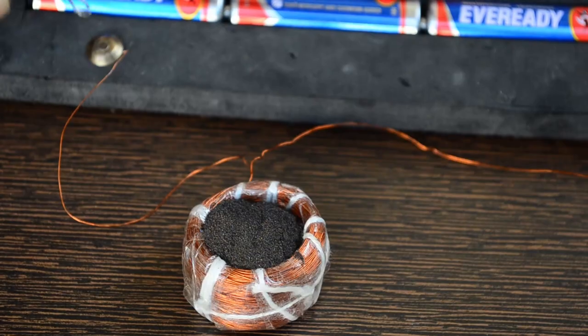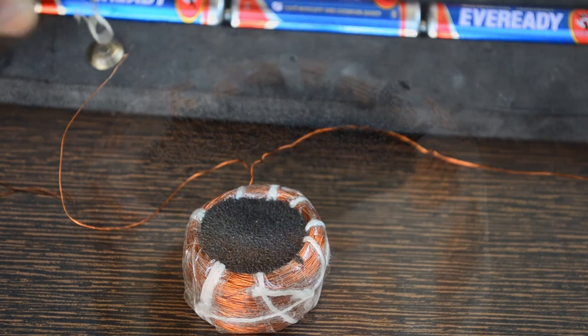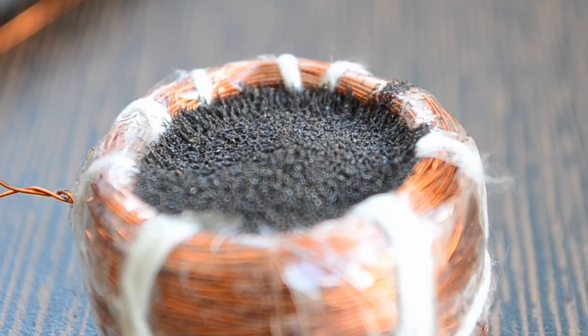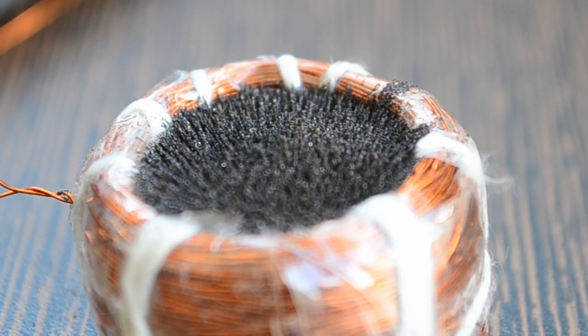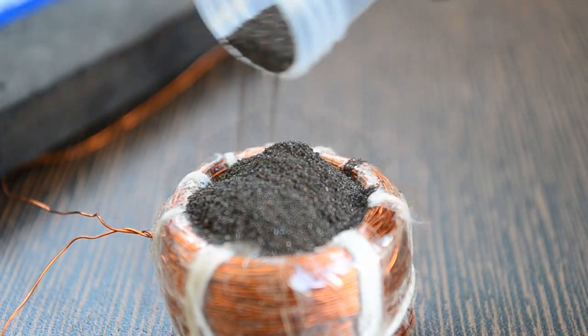The magnetic field inside this coil is very poor. Let us pour iron filings in this solenoid. When current is passed, a magnetic field is created inside. This can be seen by the orientation of iron filings.